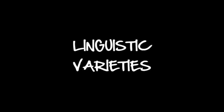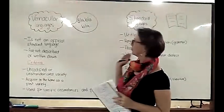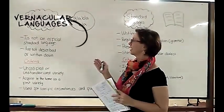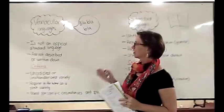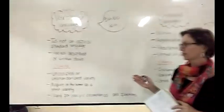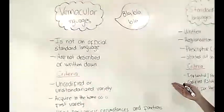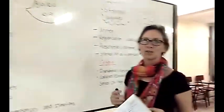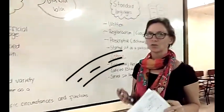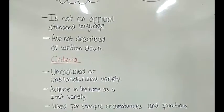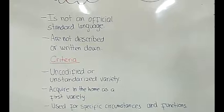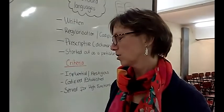First we are going to look at the linguistic varieties. As you can see here, we have two different ones: the vernacular languages and the standard languages. The characteristics of vernacular are that it is not an official standard language, it is not described or written down. So it's the language that you speak at home or maybe on the street with your friends, but it is not an official language. The criteria are that it is an uncodified or unstandardized variety and it is acquired in the home as a first variety. This language is used for specific circumstances and functions.